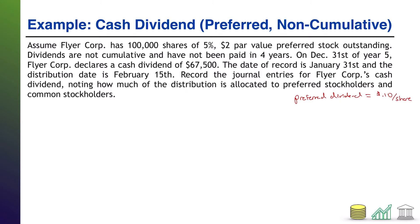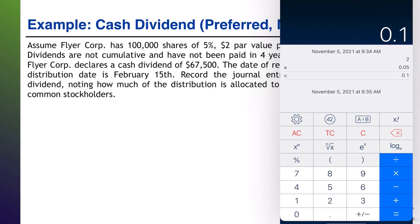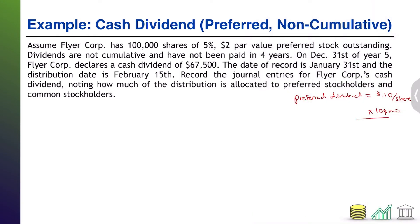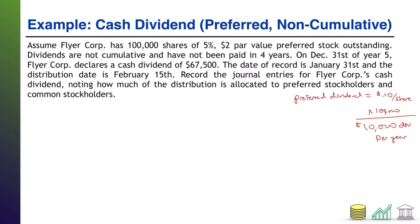There are 100,000 shares outstanding, so we multiply $0.10 times 100,000. That means $10,000 dividend per year is what the preferred shareholders are entitled to. Every share is entitled to a $0.10 return per year, and with 100,000 shares, that is a total of $10,000 per year from the company.